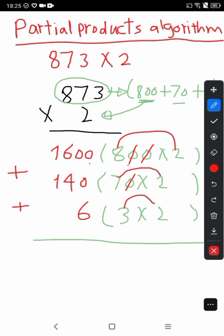Now we will add three numbers. Start with ones: 0, 0, 6 equals 6. Plus 4 equals 10, write 0 carry 1. Then 6 plus 4 equals 10, write 0 carry 1. Finally we have 1 plus 6 plus 1 equals 8, giving us 1746.